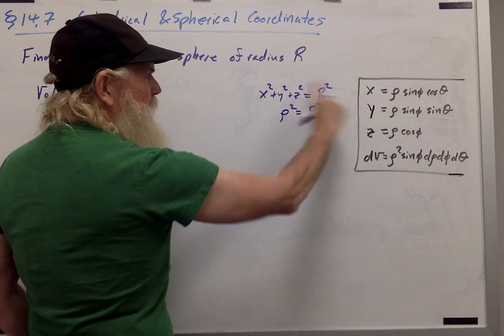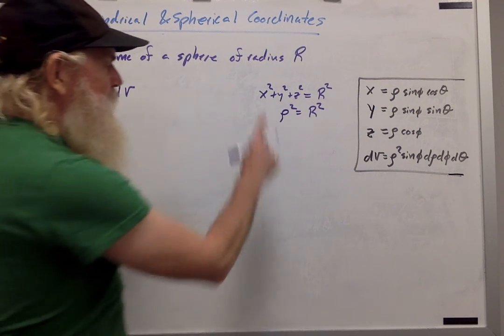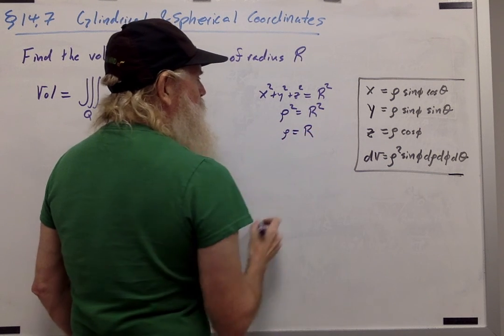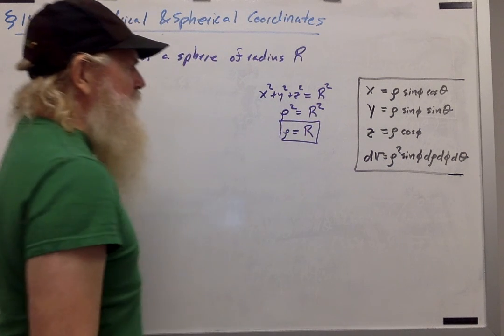If you don't remember that, just take all those things, plug in, use the Pythagorean theorem a couple of times, and this is what you'll get. So, unsurprisingly, the equation for a sphere of radius r is rho equals r.